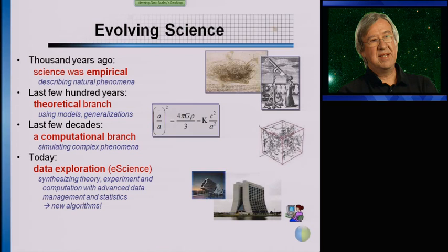Then during the Manhattan Project, we started to face problems where the analytic equations were simple enough, yet the solutions were so complex that we could not quite work them out on paper and pencil. So Fermi and Ulam were the first to apply computers to solve these equations, and this led to the computational branch of sciences.